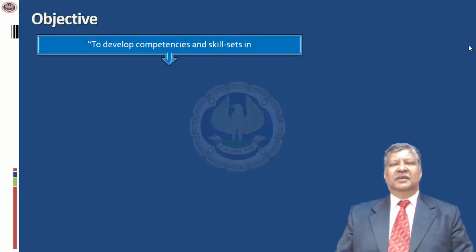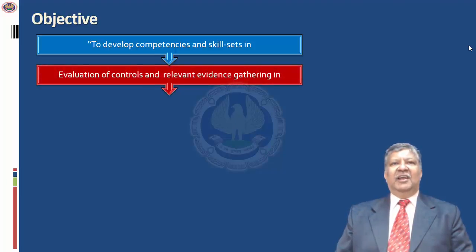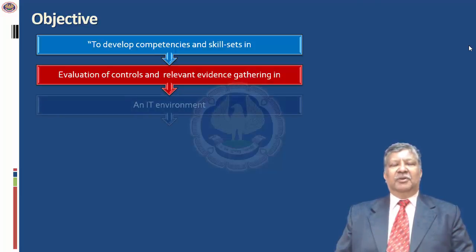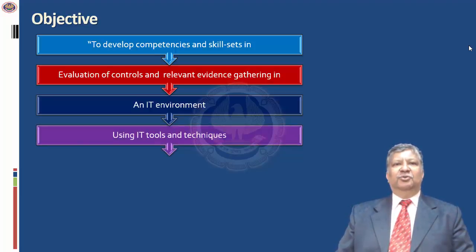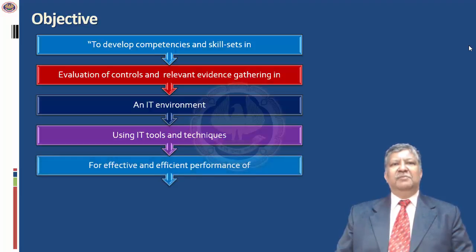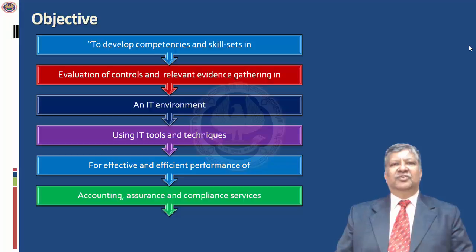The objective of the ISCA paper is that the student should be able to develop competencies and skill sets, and demonstrate and apply them in real-life situations. The primary focus is on evaluating controls. You should know how to assess and analyze evidence available in a digital format in an IT environment. Whether the enterprise is small, medium or large, most data is available digitally. As auditors, you need to know how to use relevant tools and techniques to access, analyze, and audit this digital data.